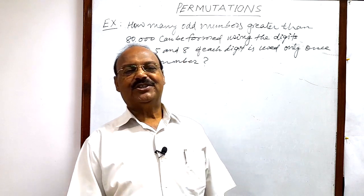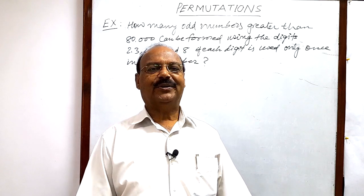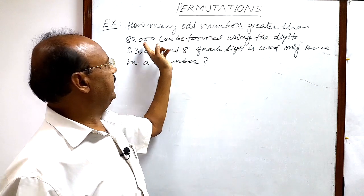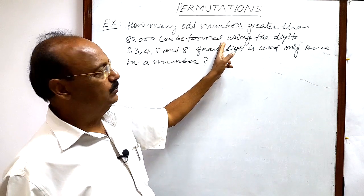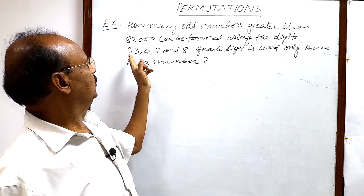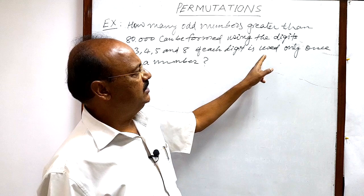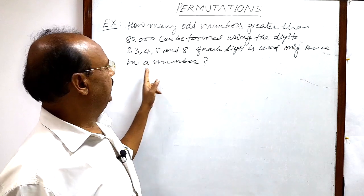Welcome students. Today we will see a question from the topic permutations. The question is: how many odd numbers greater than 80,000 can be formed using the digits 2, 3, 4, 5, and 8 if each digit is used only once in a number?